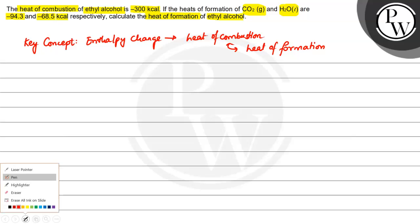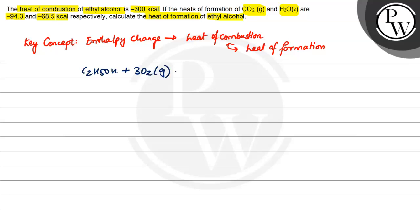First, we write the reaction: C2H5OH plus 3O2 gas forms 2CO2 gas plus 3H2O liquid. For this reaction, we have ΔH equal to -300 kilocalories.